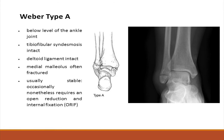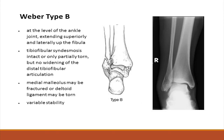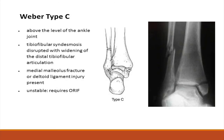Type A is where the fracture of the lateral malleolus is distal to the syndesmosis, usually caused by inversion. Type B is a fracture of the fibula at the level of the syndesmosis and is usually caused by eversion. Type C, like Type B, is also caused by eversion; however, the fracture of the fibula is proximal to the syndesmosis.